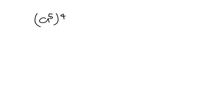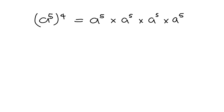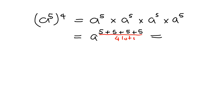We can develop another rule. Let's look at a to the power of 5, and that whole thing raised to the power of 4. What this means is we've got a to the power of 5 multiplied by itself 4 times. When multiplying powers we add the exponents, so we get a to the 5 plus 5 plus 5 plus 5. That is 4 lots of 5 — in other words, 4 times 5 — and so our answer is a to the power of 20.